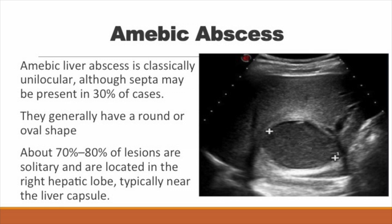Amoebic abscesses sometimes have a classical presentation, though not always. Most times it's a solitary lesion in the right lobe of the liver and near the liver capsule — near the diaphragm. So you have a well-defined, single lesion in the right lobe of the liver on the periphery. This is usually a suggestive feature of an amoebic abscess.